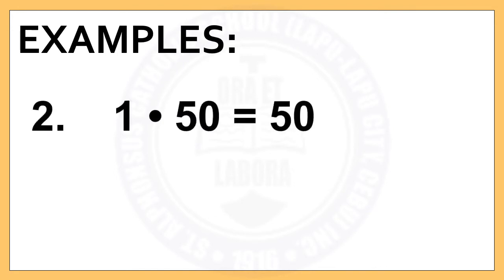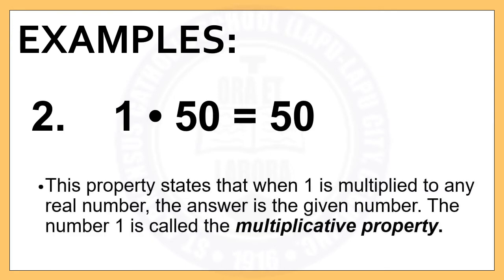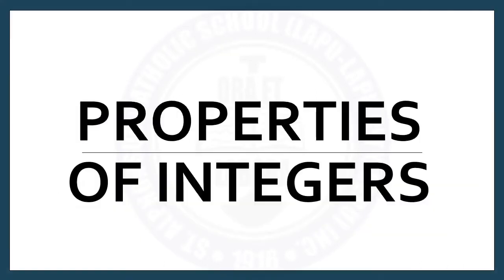Number 2: 1 times 50 is equal to 50. Again, this property tells us that when you multiply 1 to any real number, the answer is always the given number.